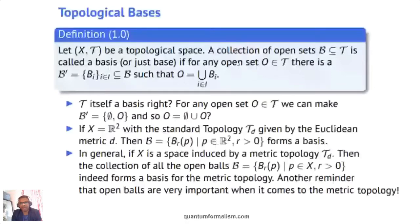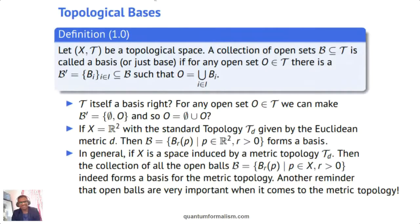So a basis is a sub-collection of the topology where, whenever you have any open set, you can always find a sub-collection in B such that the open set is a union of elements of that collection. Therefore, is T itself a trivial basis? Yes — because for any open set, we can make B-prime the empty set and O itself, since O is open. So it's a valid choice. Very trivial, very boring.